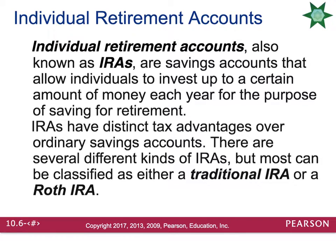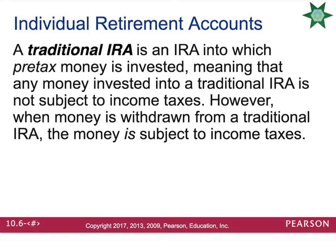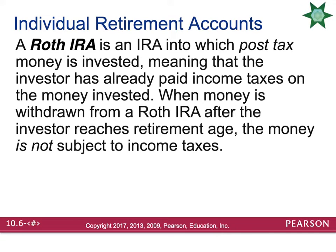Individual retirement accounts, also known as IRAs, are savings accounts that allow individuals to invest up to a certain amount each year for retirement. IRAs have distinct tax advantages over ordinary savings accounts, and most can be classified as either traditional or Roth. A traditional IRA uses pre-tax money, so contributions are not subject to income tax now, but withdrawals 20 or 30 years later are taxed. A Roth IRA uses post-tax money — you've already paid income taxes — so when you withdraw the money at retirement, you do not pay income taxes again.